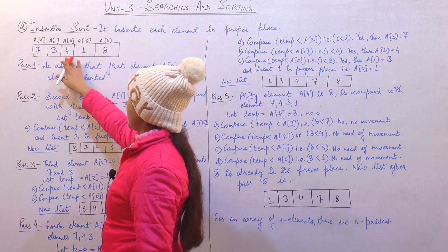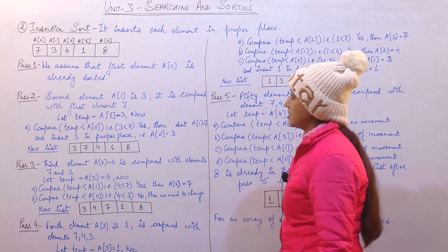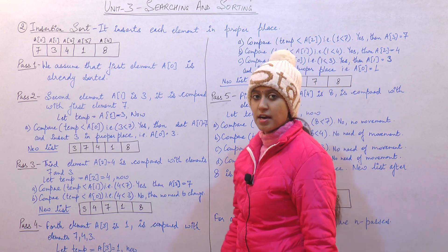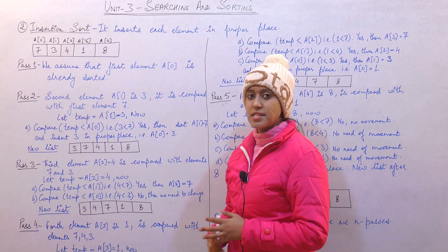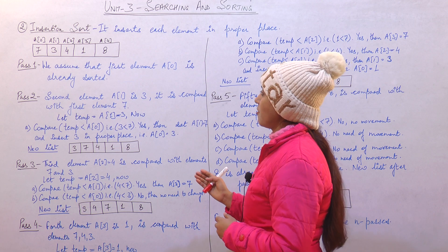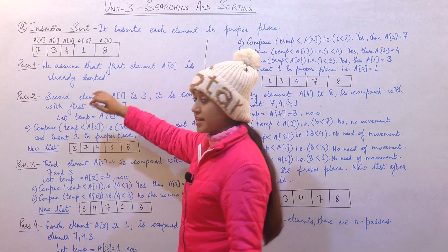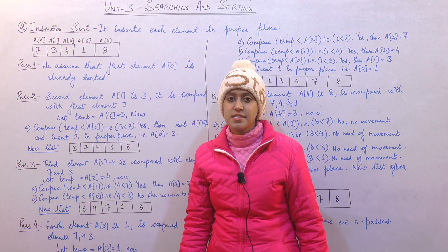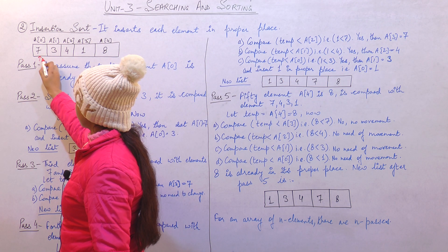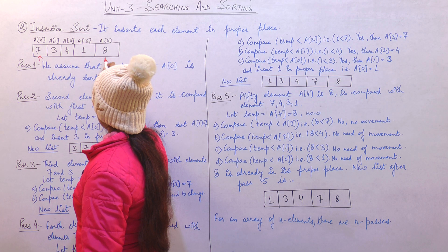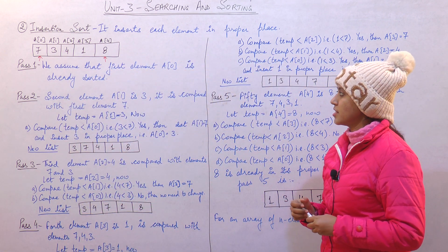We are given an array of 5 elements, and these 5 elements are, as we can see, unsorted — meaning they are not in proper order, neither in increasing nor in decreasing form. We have to sort this array in increasing form, with the smallest element at the leftmost position and the largest element at the rightmost position.